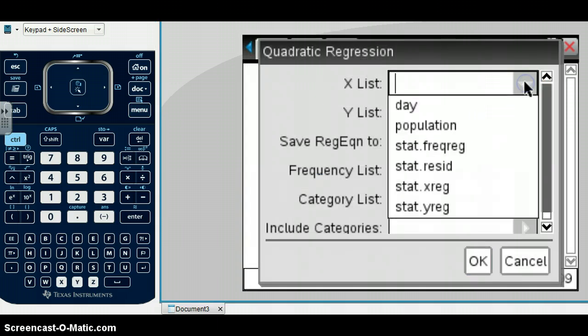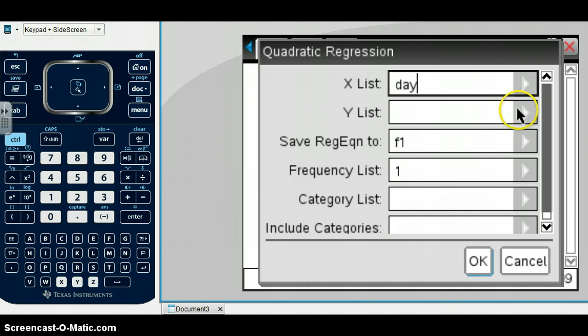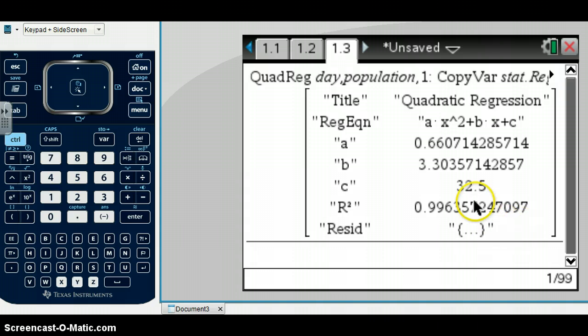Our X list was our day, and the Y list was Population, and you come down and click OK. And when you do that, it gives you the regression equation AX squared plus BX plus C,